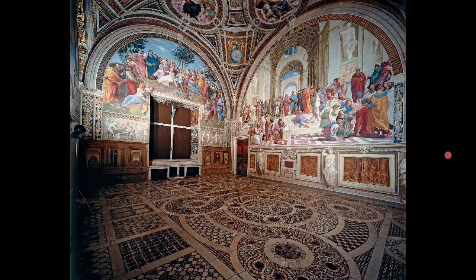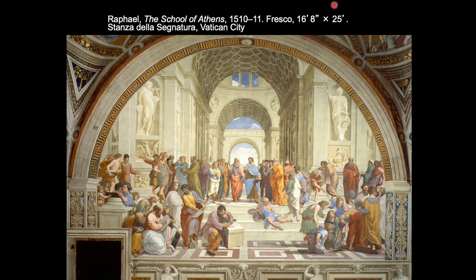In 1508, Raphael was commissioned to paint a series of frescoes on the walls of Pope Julius II's private library and study in Rome. He painted the four branches of knowledge as they were conceived in the 16th century: religion, philosophy, poetry, and law. The most influential of these frescoes is the philosophy fresco titled the School of Athens, painted around 1510 to 1511. Using linear perspective and chiaroscuro, Raphael created this large, multifigured composition depicting the scholars, mathematicians, philosophers, and other great thinkers of antiquity — the figures to which the ideals of the Renaissance could be traced back.